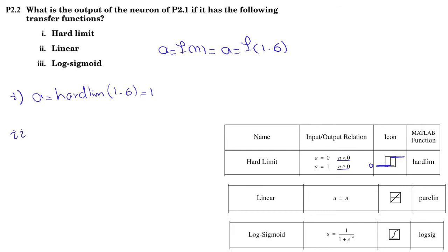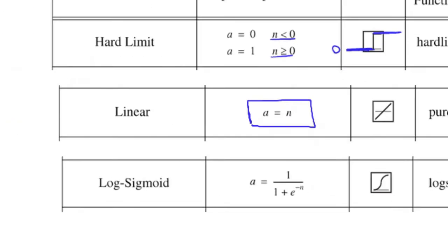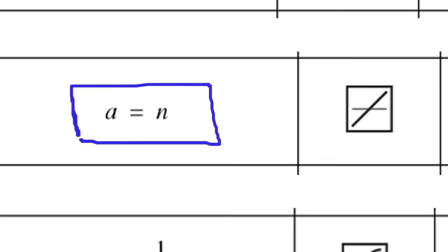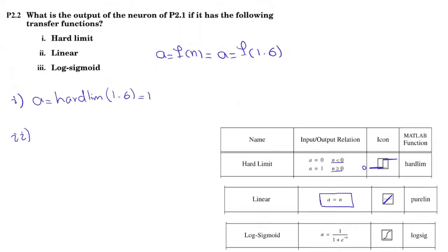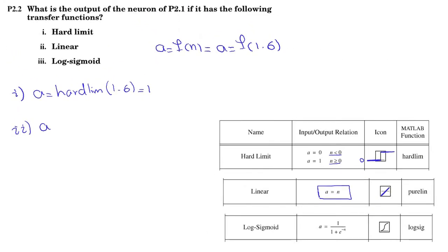The second one is just the linear function. A equals N. You can see it's a linear function. So I have A equals, its MATLAB function is pure LIM, 1.6 is 1.6.